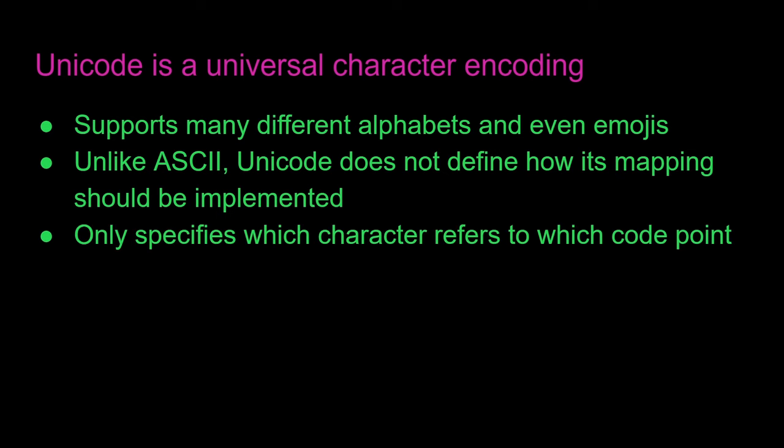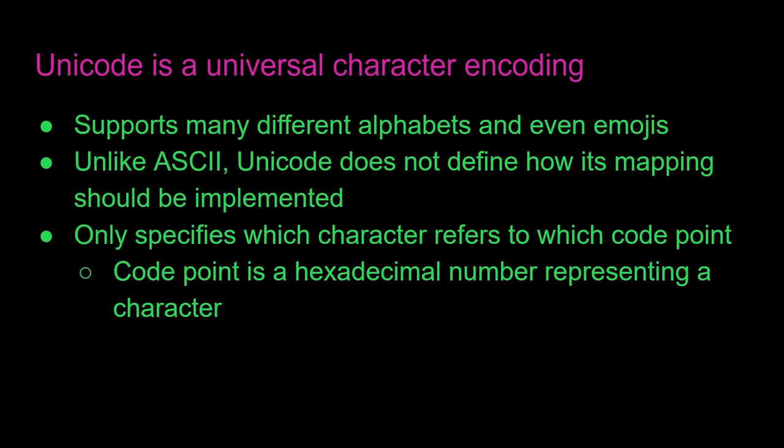It only specifies which character refers to which code point. A code point is a hexadecimal number representing a character. For example, U+0041—note that's hexadecimal—represents A. And 0041 hexadecimal is actually equal to 65 in decimal.